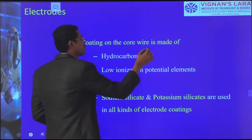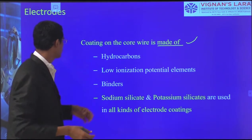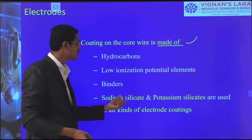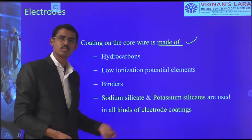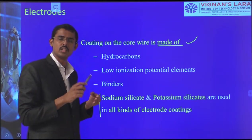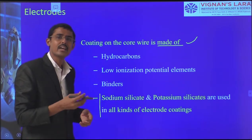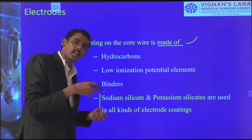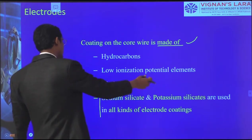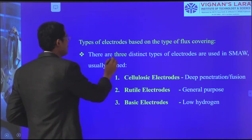The coating on the core wire is made up of hydrocarbons, low ionization potential elements, binders, sodium silicate, and potassium silicate. These are used in all kinds of electrodes. We have three kinds of electrodes: basic, rutile, and cellulose. In all three, sodium silicate and potassium silicate are added to act as ionizers, so the current polarity will flow through without any obstacles.